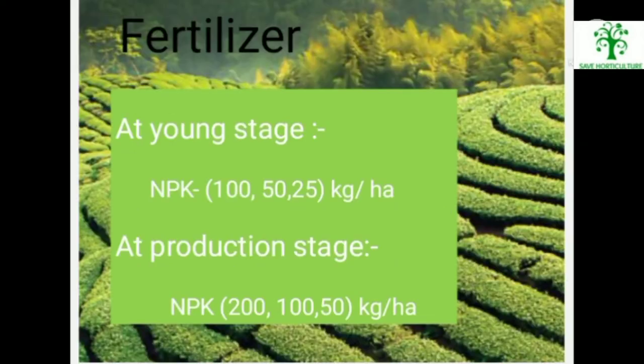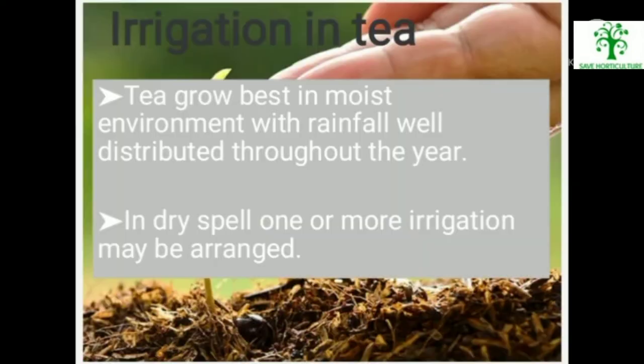Fertilizer. At young stage, NPK 150-25 kg per hectare is applied. At production stage, NPK is applied at 200-150 kg per hectare.